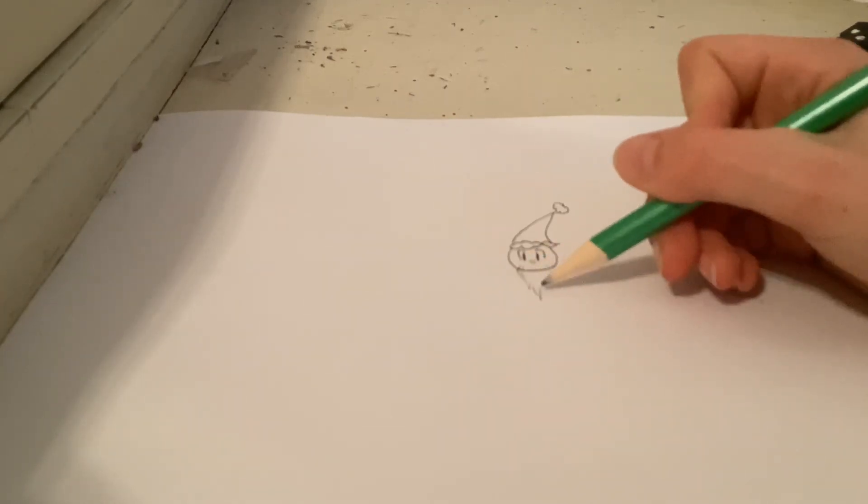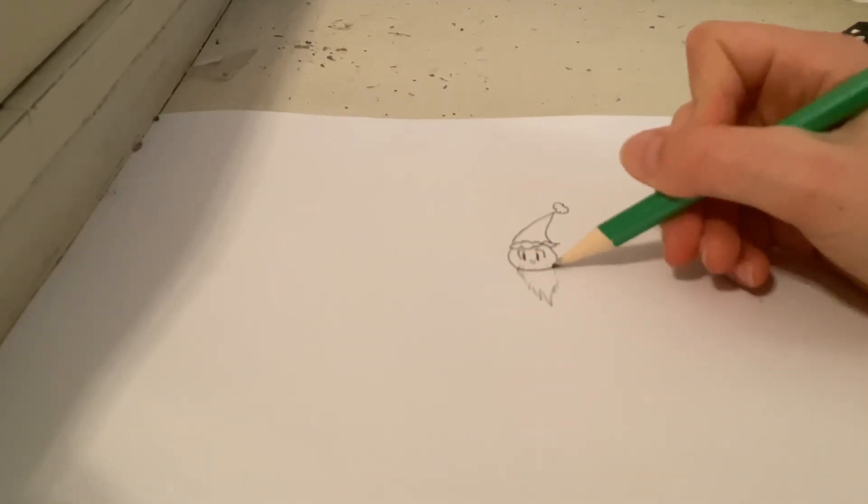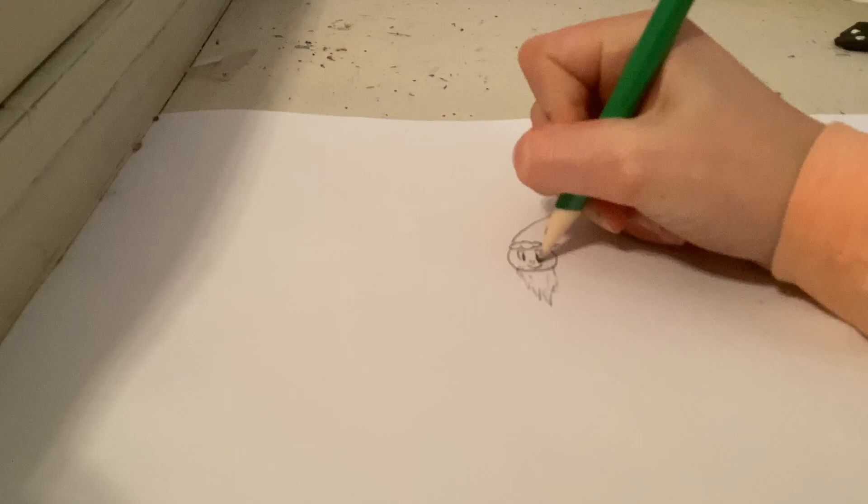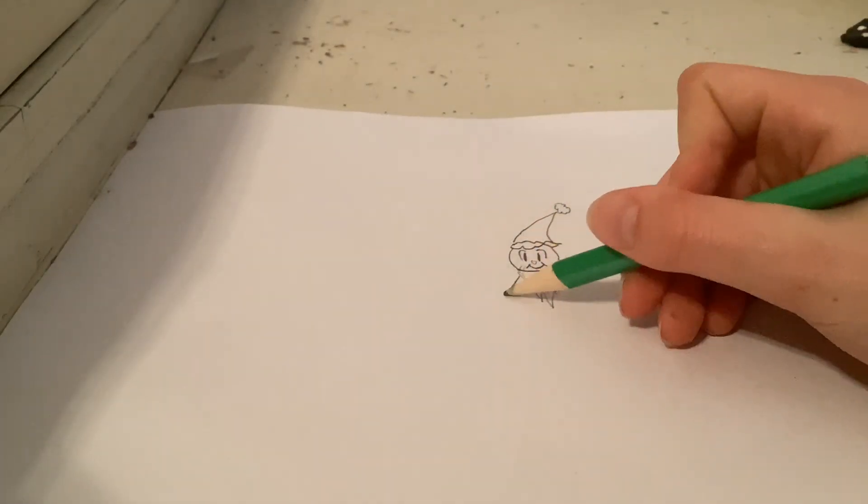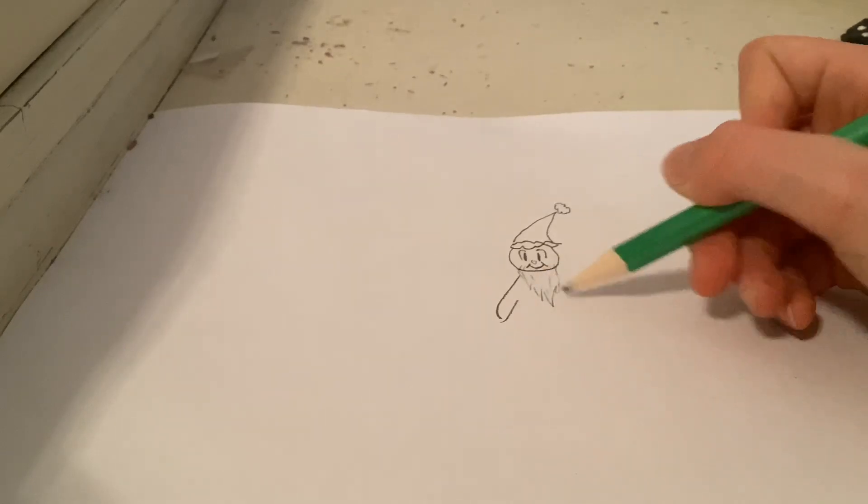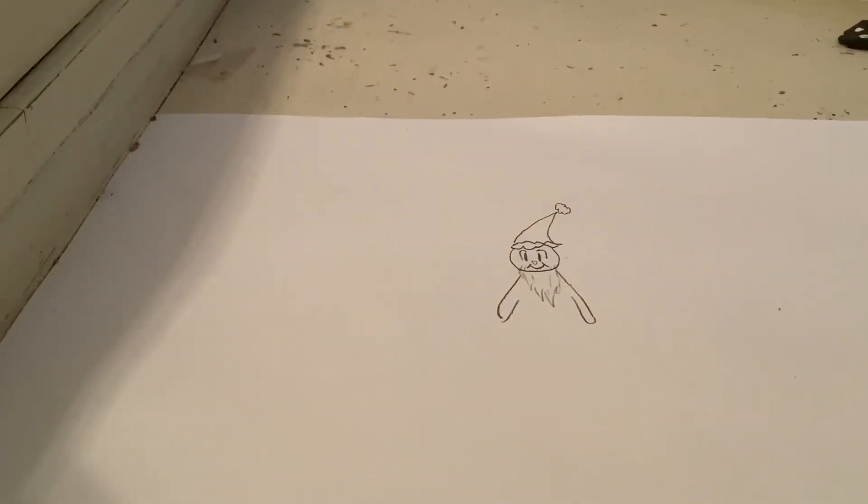So I have lines here and curve a beard for Santa and some extra decorations. We can't forget his jolly smile. There we go. And now we've got to draw his suit, so we'll start by two arms.